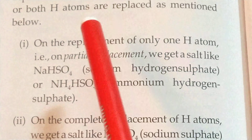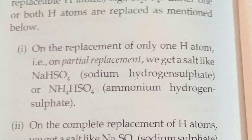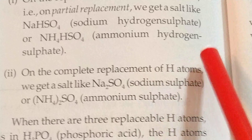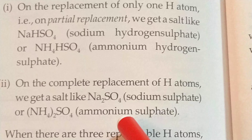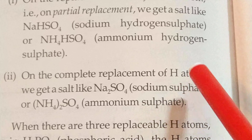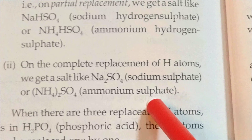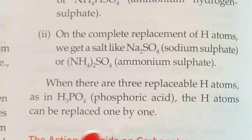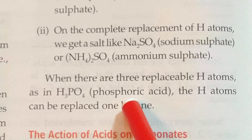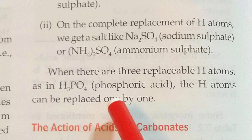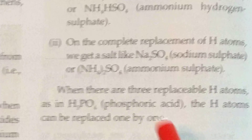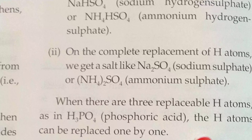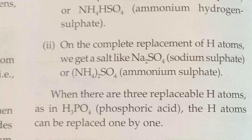On the complete replacement of hydrogen atoms, we get a salt like Na₂SO₄ — sodium sulfate or ammonium sulfate. When there are three replaceable hydrogen atoms, as in phosphoric acid, the hydrogen atoms are replaced one by one.